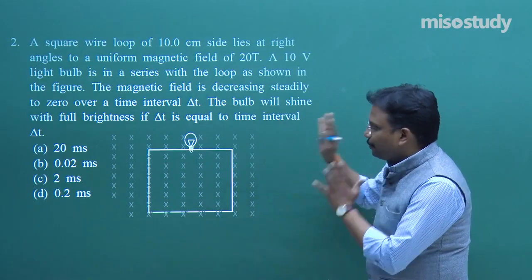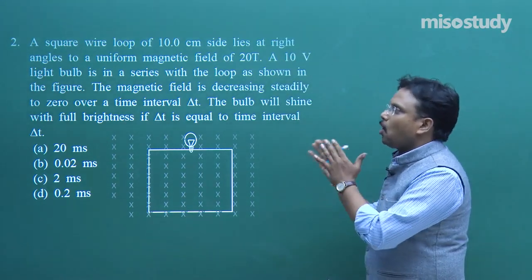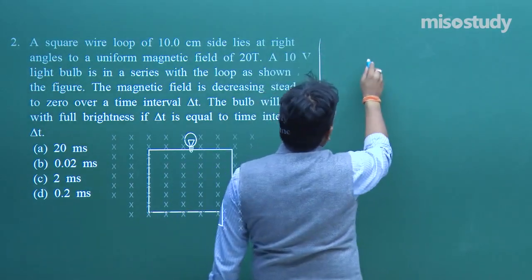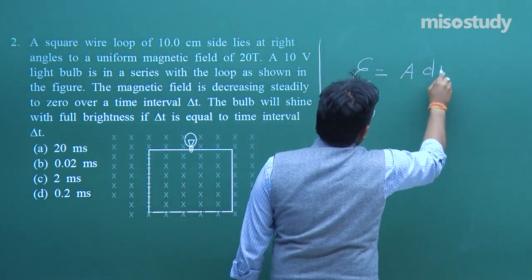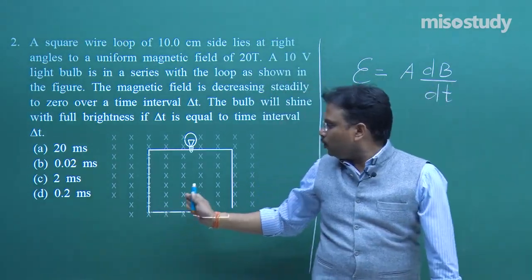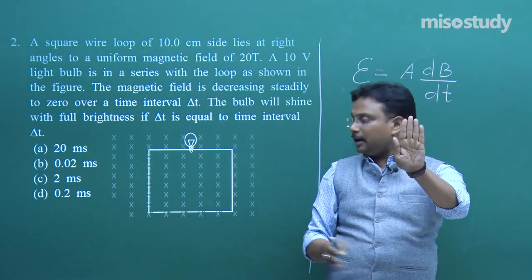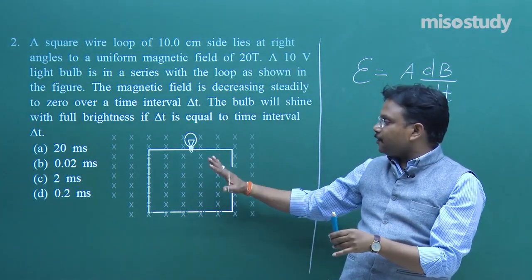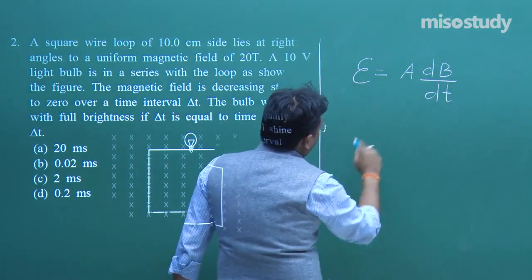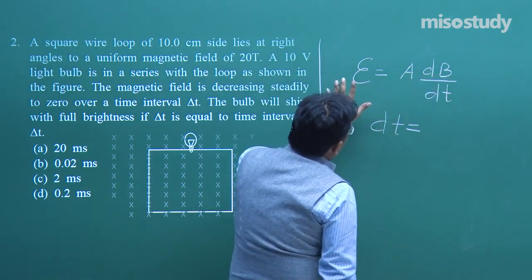The formula is ε = A · dB/dt. The angle θ is not important here because the magnetic field lines are oriented so that θ is fixed. We need to find Δt, which rearranges to: Δt = A · ΔB / ε_induced.